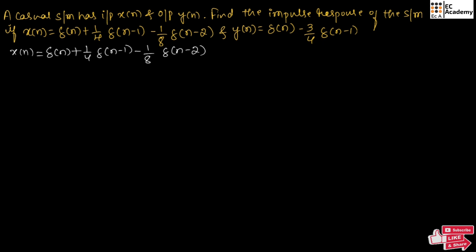For this, let us take the Z-transform. Therefore, we can write X(z) equal to: delta[n] written as 1, plus 1/4 delta[n-1] written as Z⁻¹, minus 1/8 delta[n-2] written as Z⁻².